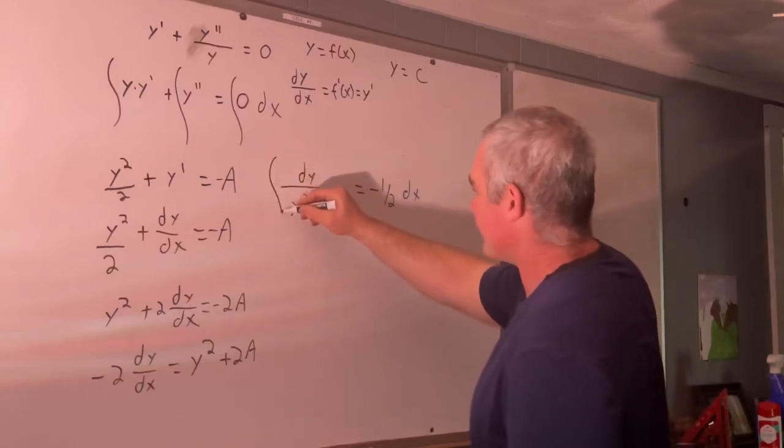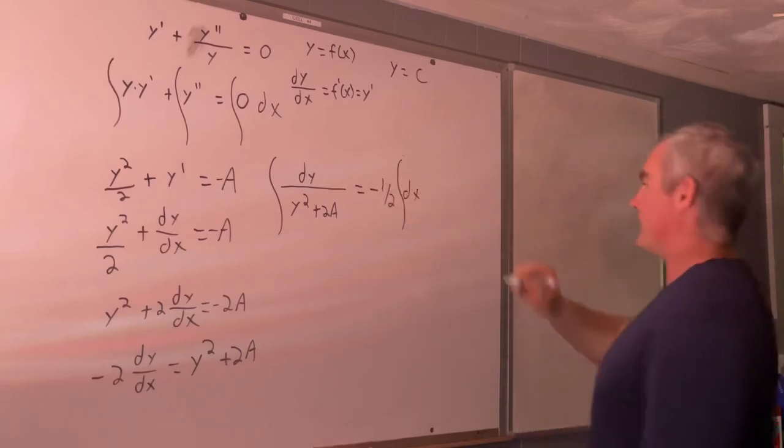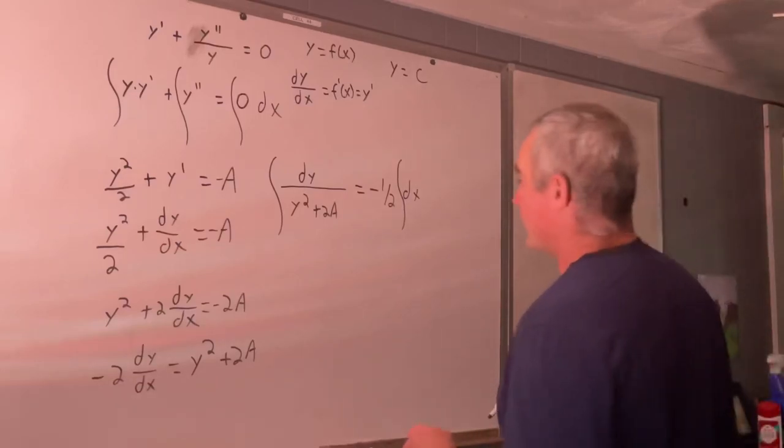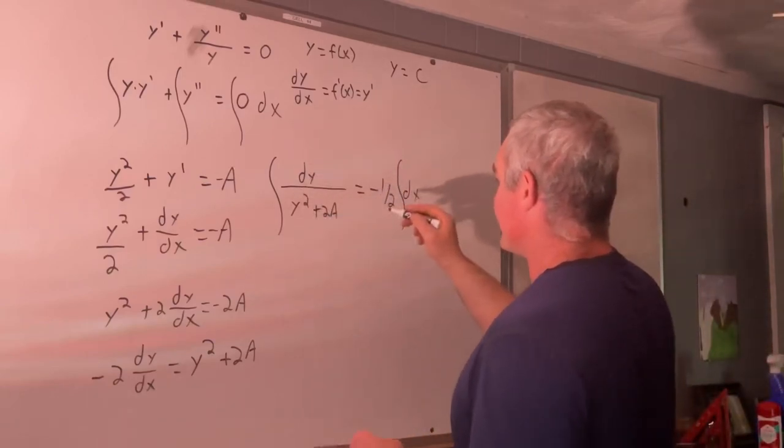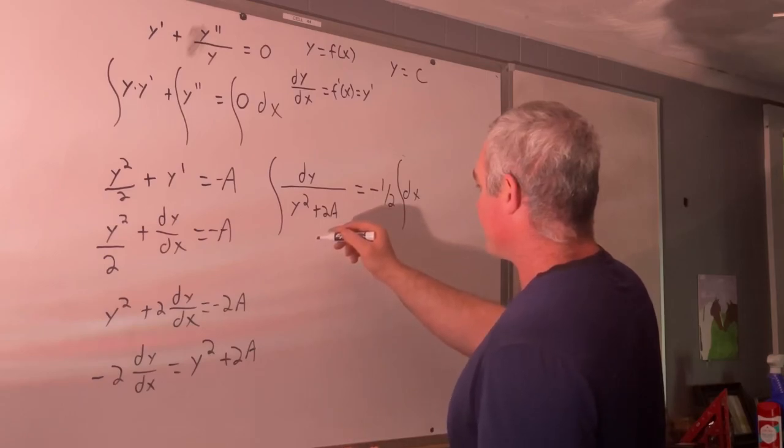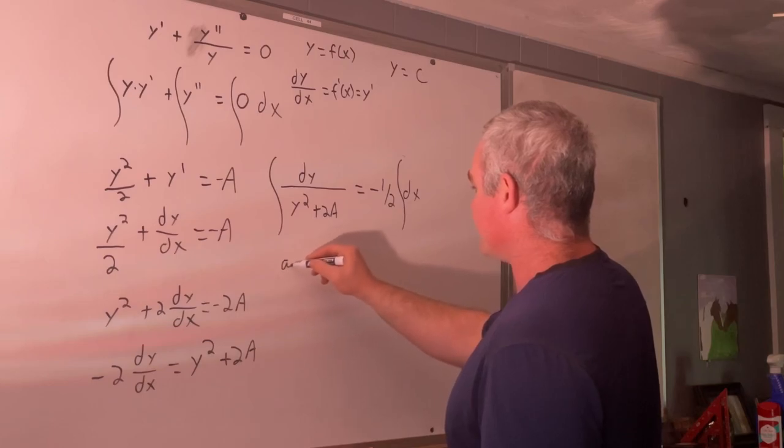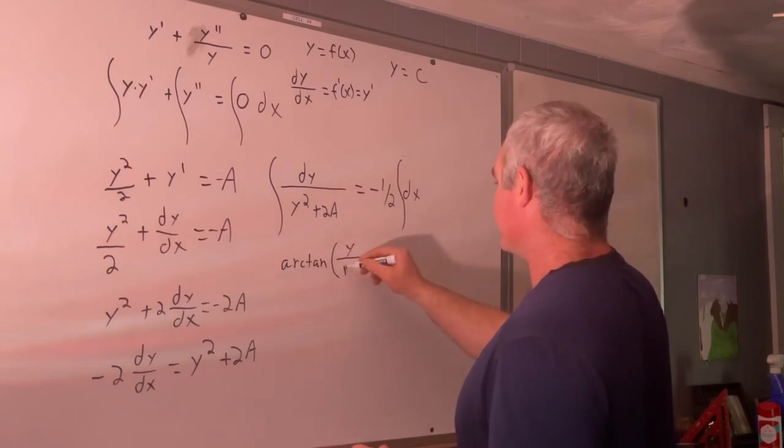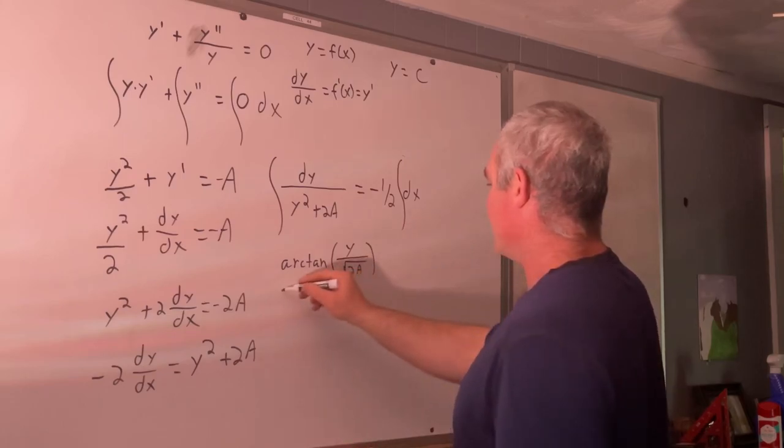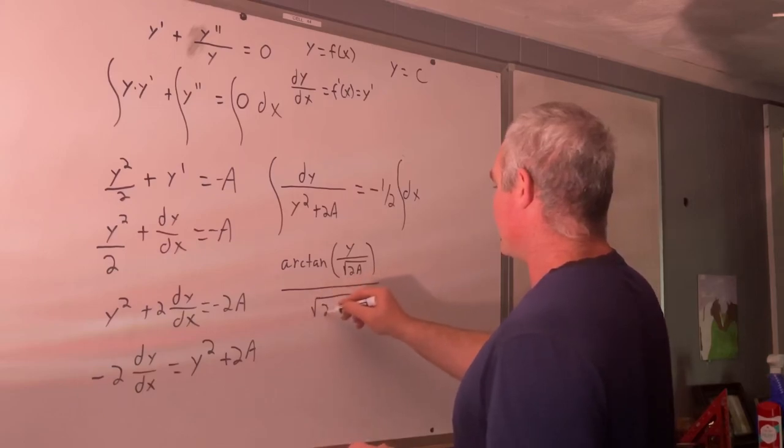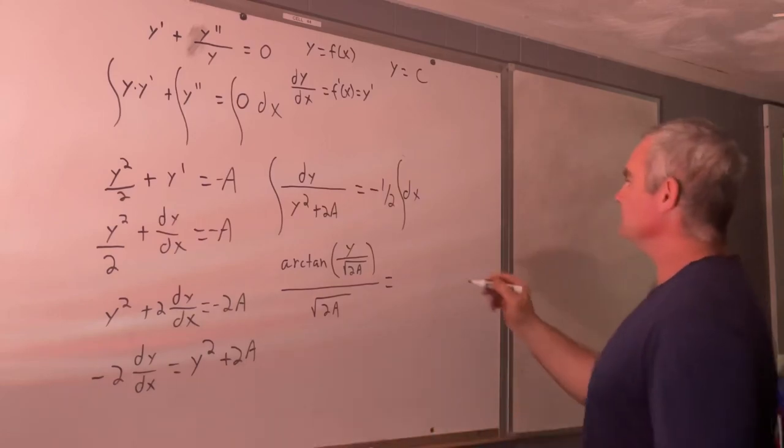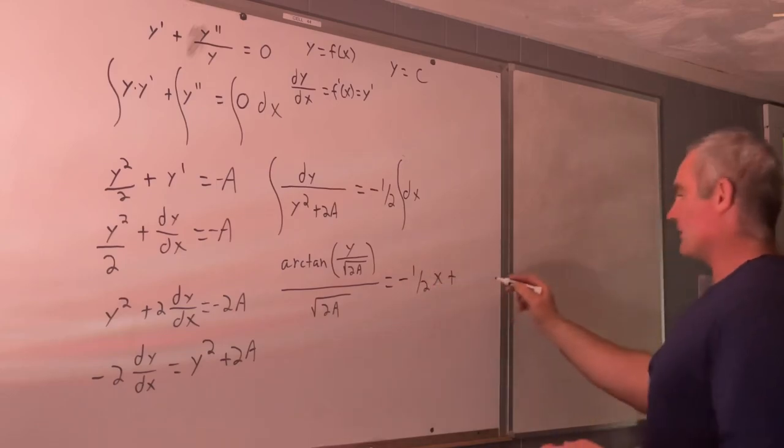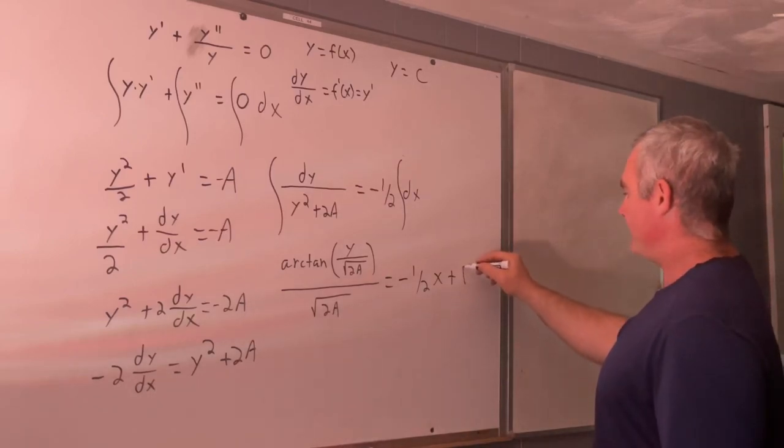So now the next step again, we're just going to go ahead and take the indefinite integral on both sides and I'll leave that negative one half outside. So what does this give us? This is a pretty familiar form right here. This is just arc tangent of y over the square root of 2a over the square root of 2a. And that's going to be equal to negative one half x plus another arbitrary constant, which we will call b.